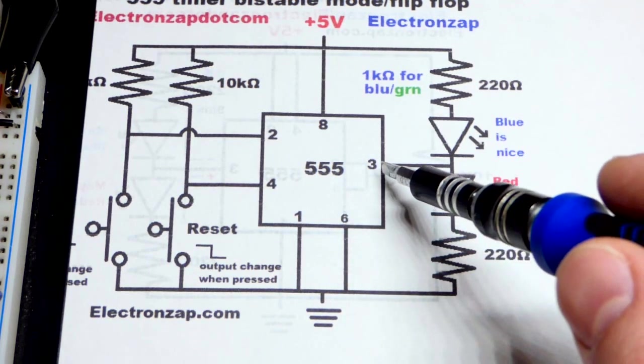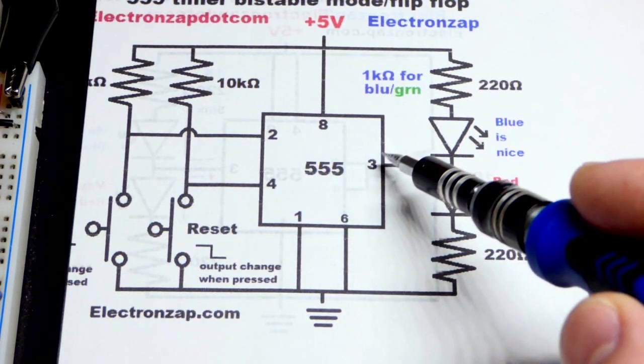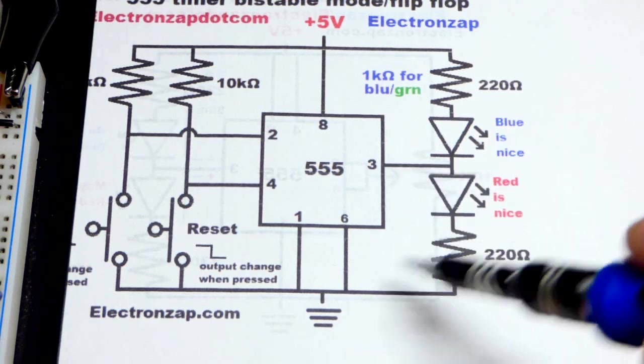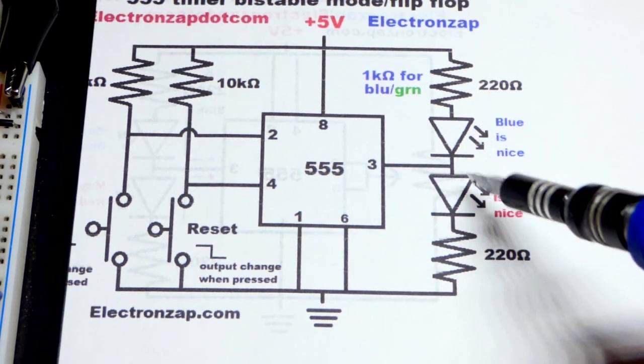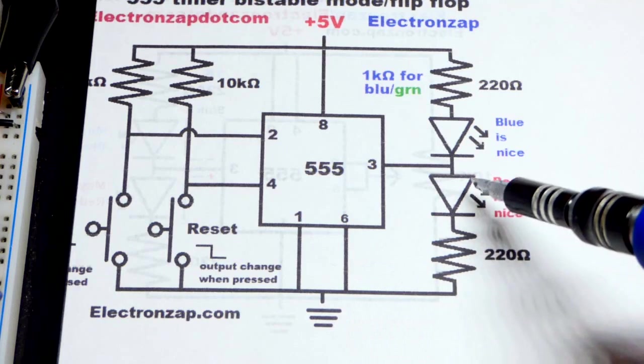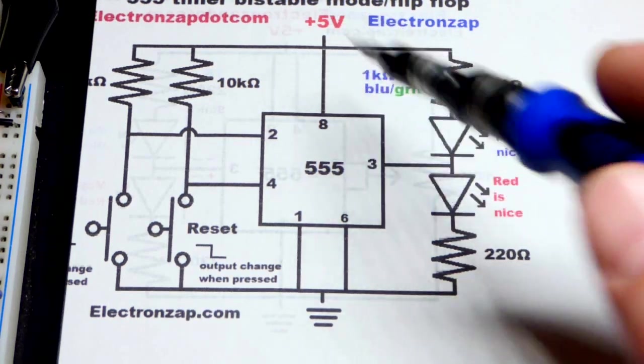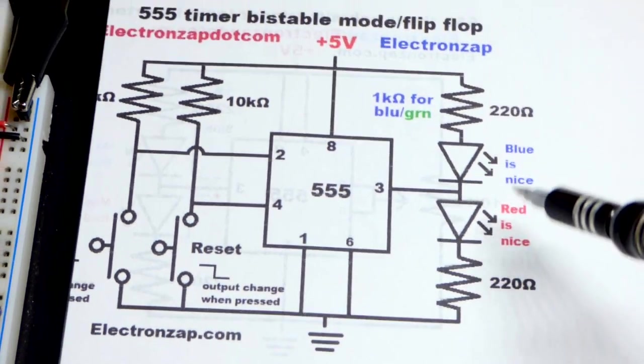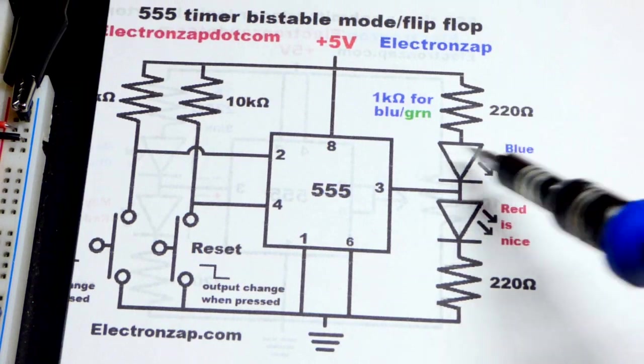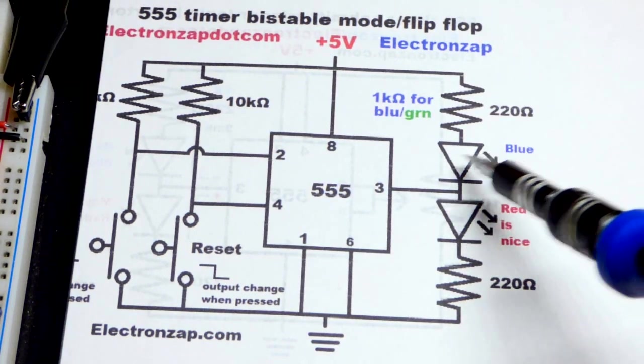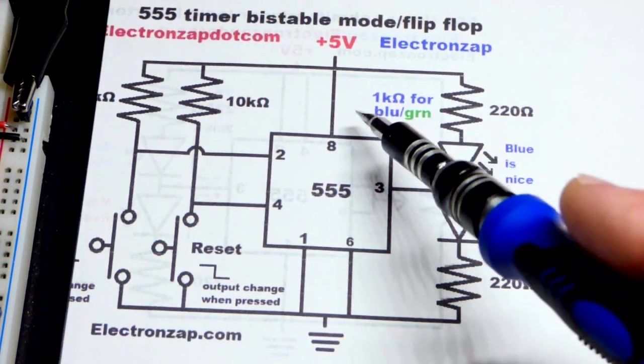Now the LEDs, we're going to use 220 ohms for the red LED because that works good for five volts. The blue LED is a lot brighter than the red LED plus it's going to have more voltage across it.